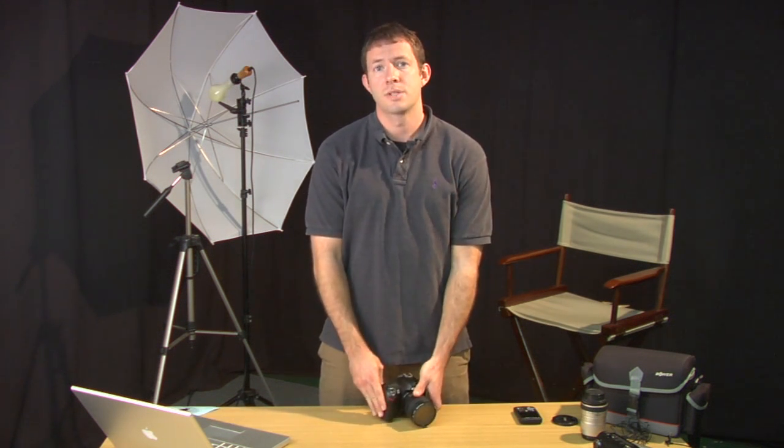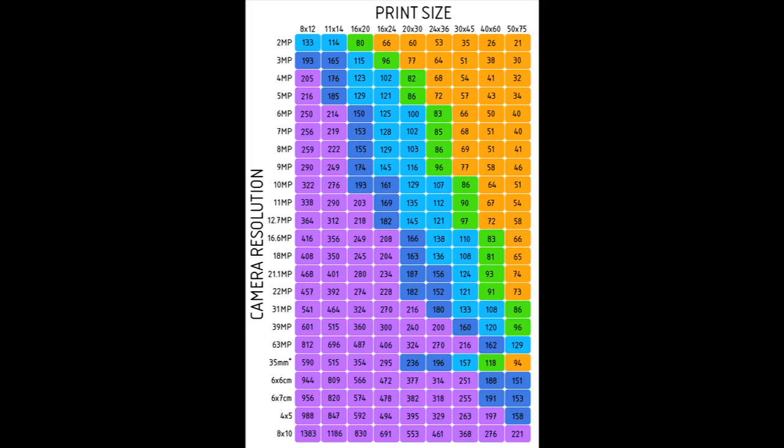Anywhere from two to six megapixels is going to allow you to print something around a four by six or a five by seven image. As you get closer to six megapixels, you'll be able to print eight by ten images. But for anything eight by ten or larger — like eight by twelve, eleven by seventeen, anything larger than that — you're going to need at least six megapixels.